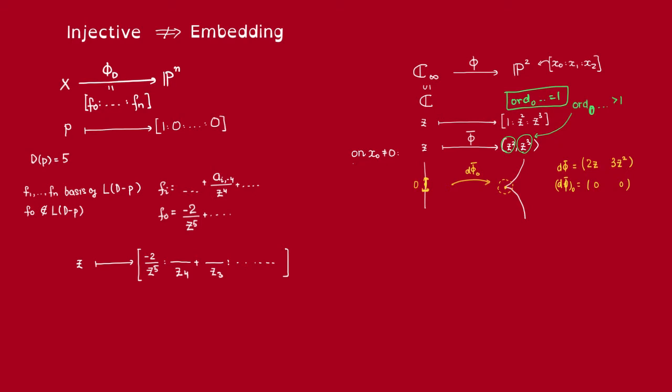So this F_0, we can choose this F_0 to not lie inside L(D - P), so that the order of vanishing at P of F_0 will be smallest, and it's going to be exactly equal to -D_P. For example, let's say that D_P is 5. Then if we take z to be a local coordinate centered at P, F_0 will have the coefficient of z to the 5, and F_0 has to be non-zero because F_0 does not lie inside L(D - P). Alright, and then it has terms of higher order.